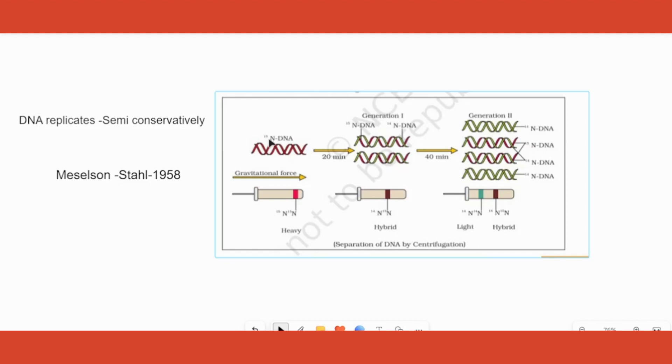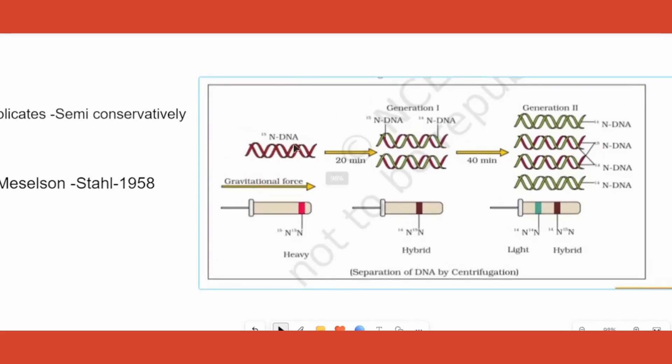As the bacteria grew for many generations, it started incorporating the nitrogen that is there in the medium into its DNA. After many generations, it would not have any N14 nitrogen at all. Instead, it would have only N15 nitrogen in the nitrogen bases of the bacteria's DNA.